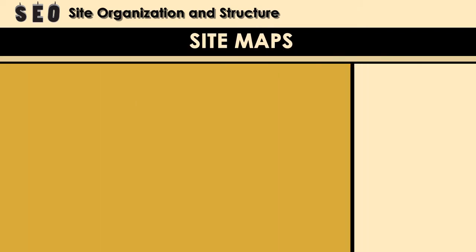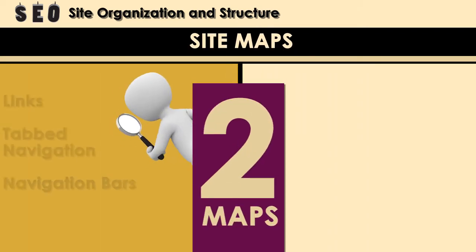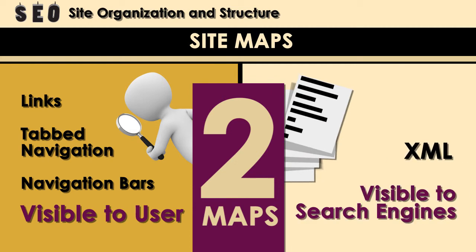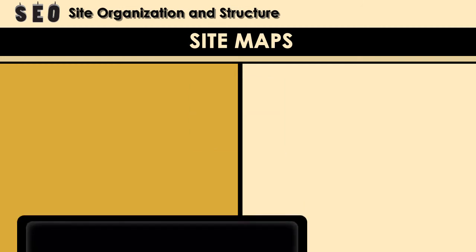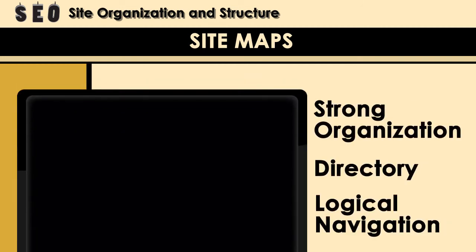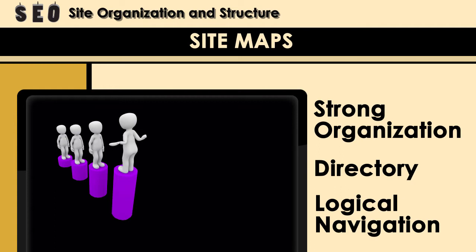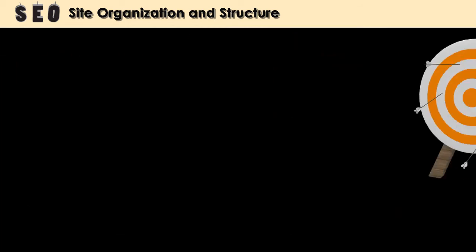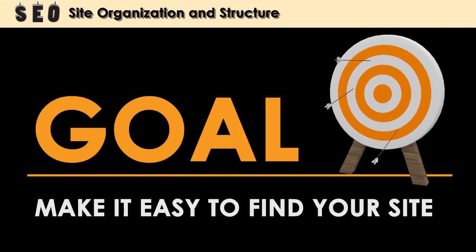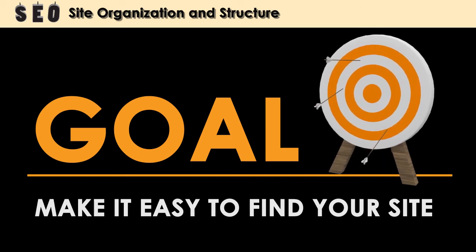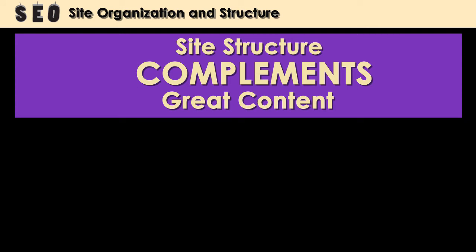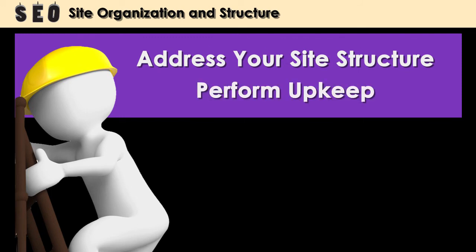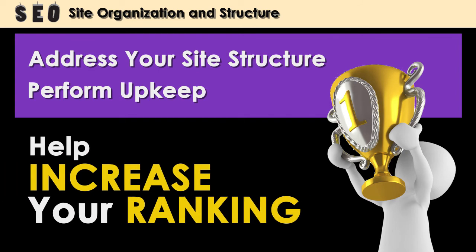Each site should have two maps: one for visitors to the website to help them find what they're looking for, and a second site map written in a coding language like XML, specifically for search engines. Starting with a site design that has strong organization, a directory, and logical navigation will help to increase the site's rankings and reduce site-related issues in the future. It will make any maintenance or changes go more smoothly. The goal is to make it as easy as possible for the search engine to find your site and process the content. Site structure is crucial to this — it complements great content and allows that content to be found. If you haven't addressed site structure or have fallen behind in its upkeep, take time to clean things up and organize your site. It will help increase your ranking.